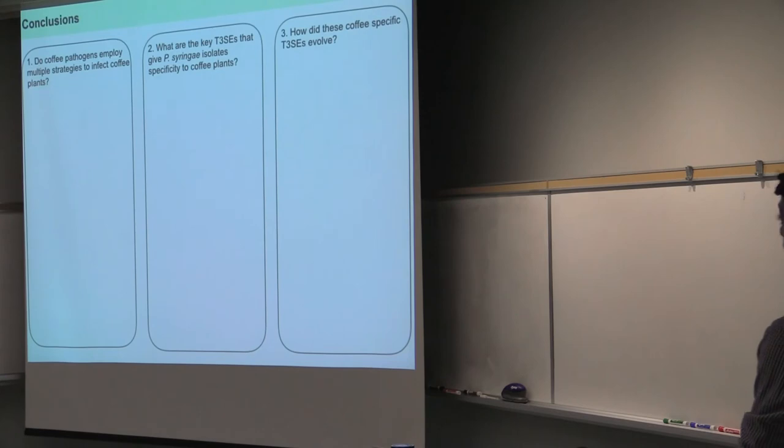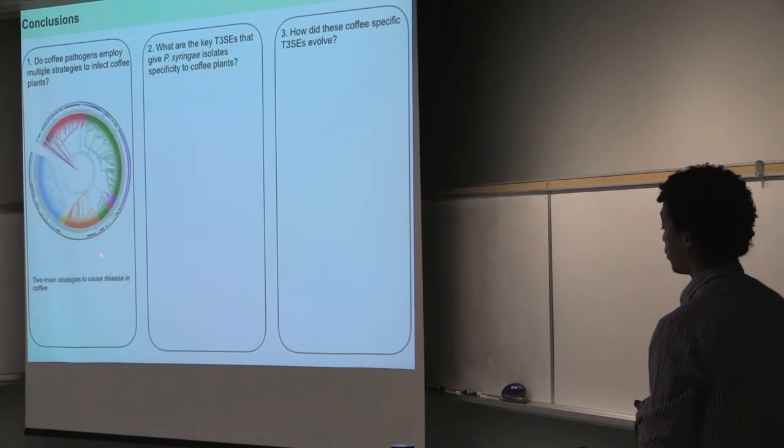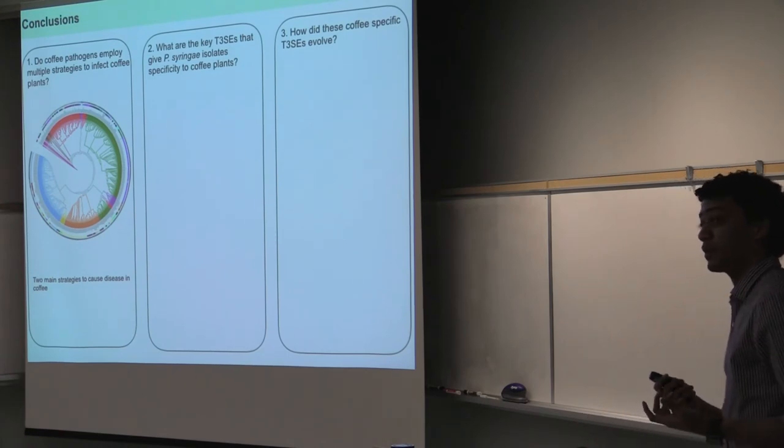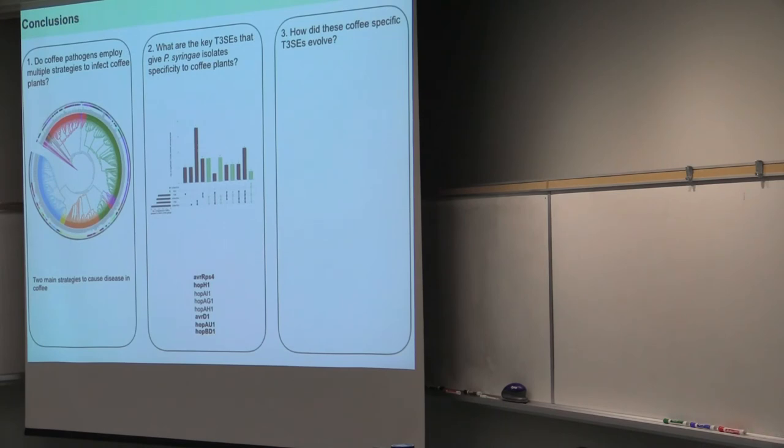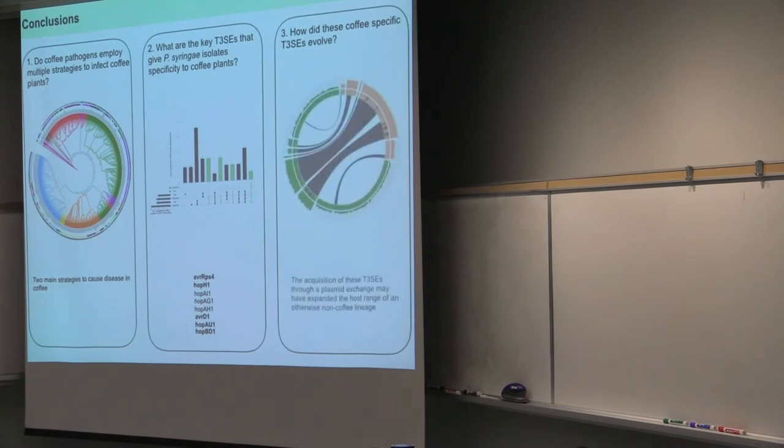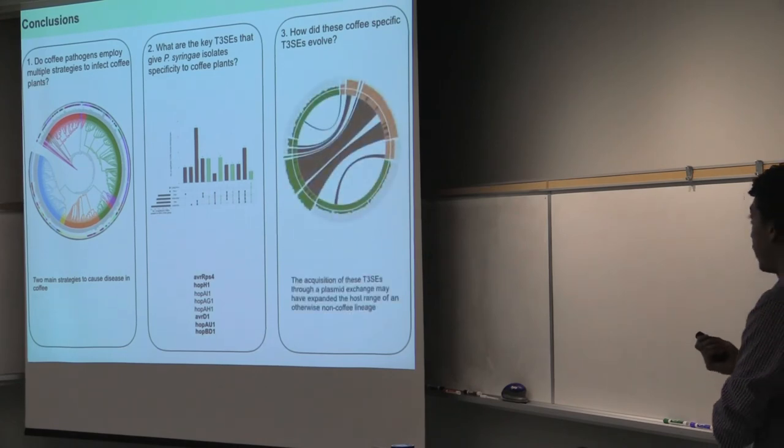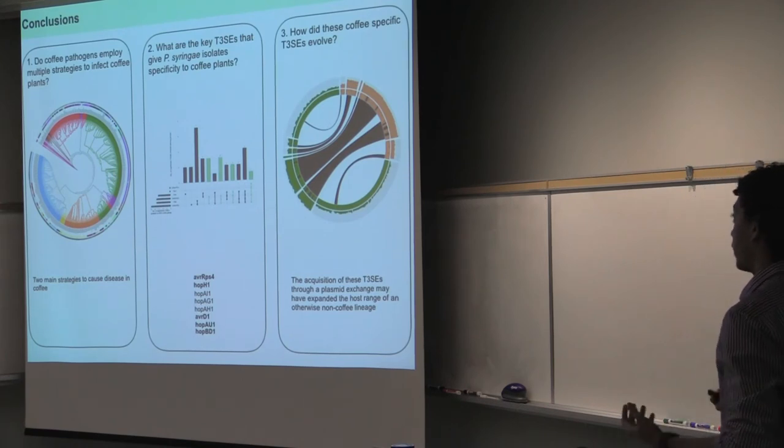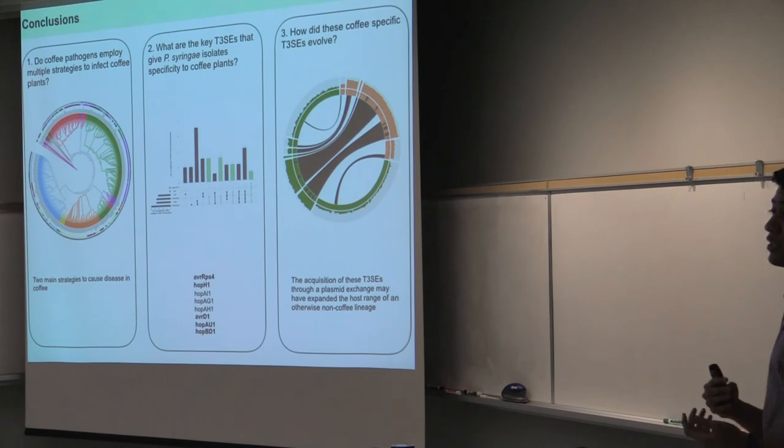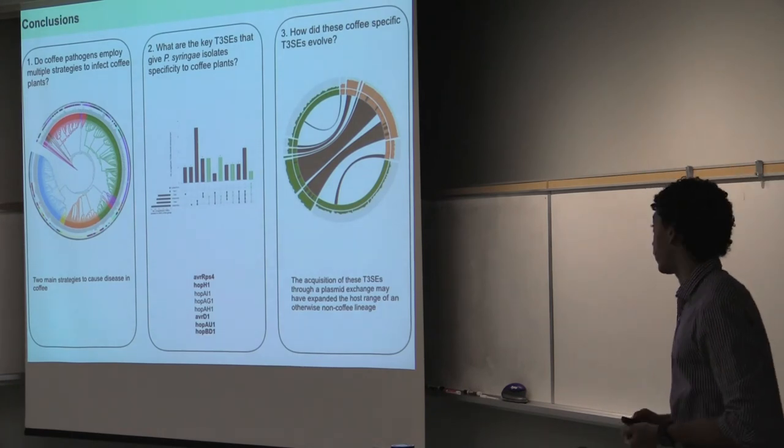So today I just showed you that in regard to coffee plants, we have two strategies that isolates seem to use. One that in fact uses type 3 effectors, and the other one that doesn't. Then based on our analysis of association, we could find eight effectors that seem to be strongly associated with coffee. And our evolutionary analysis suggests then that one lineage evolved those effectors first, and then transferred a plasmid to some other lineage that wasn't an actual pathogen of coffee. And then by getting this new plasmid, this lineage became able to infect coffee as well.